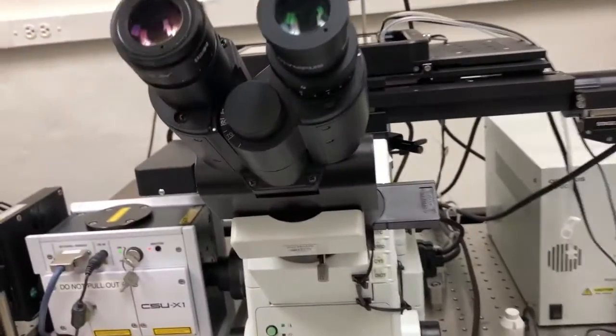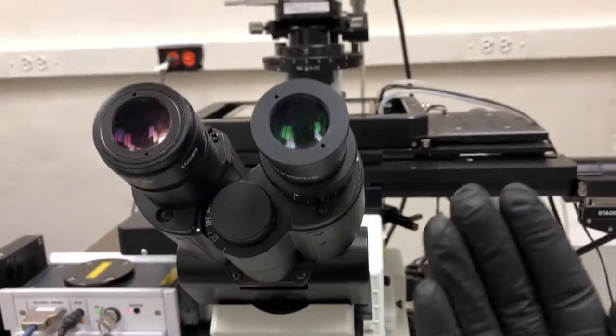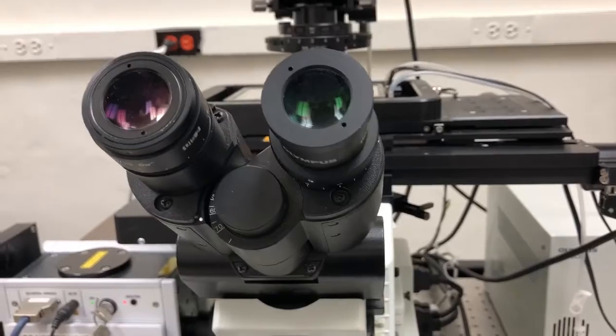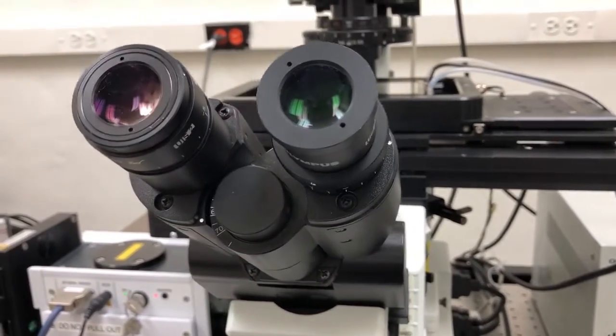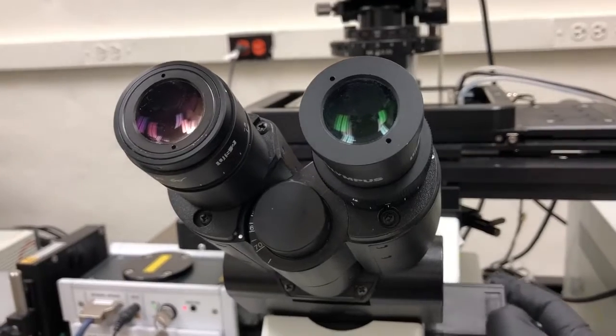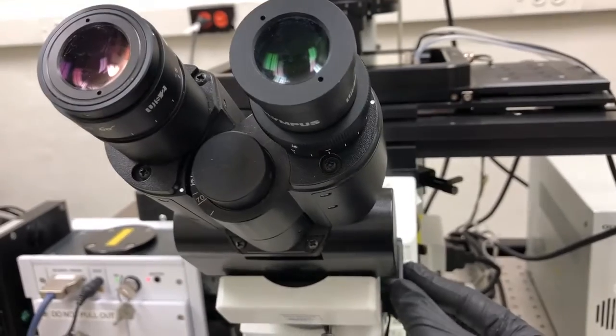First, we need to make sure that we push this slider in to block the ability of light to reach the eyepieces. The reason for this is, as I said before, this triggers an interlock with the lasers. If this is pulled out, the lasers won't turn on, so we won't be able to see anything. I'm going to push that in.